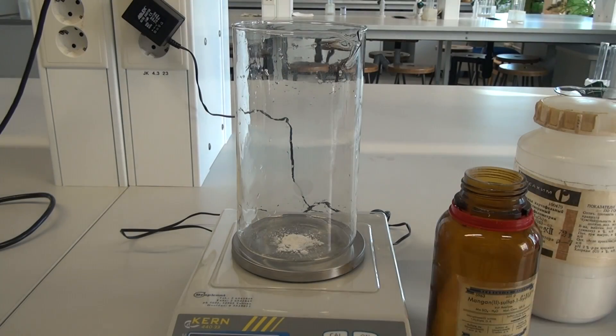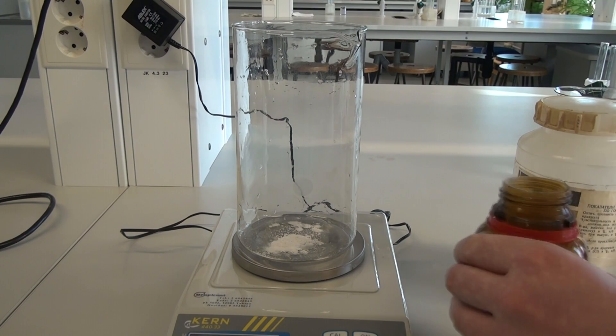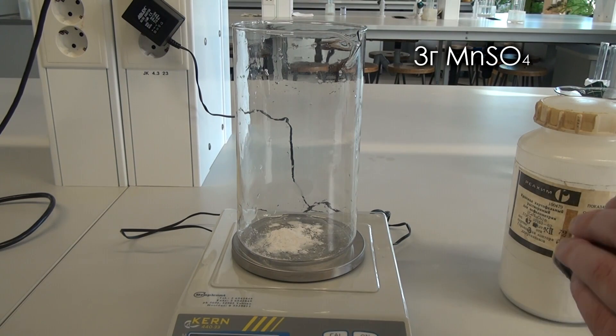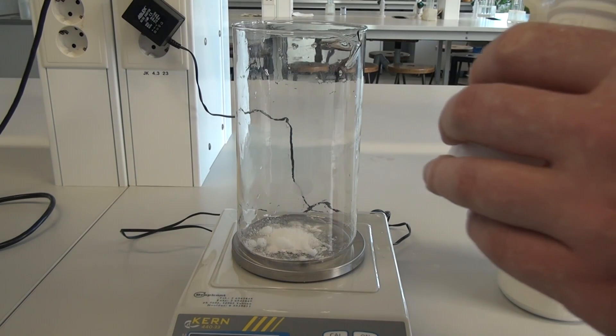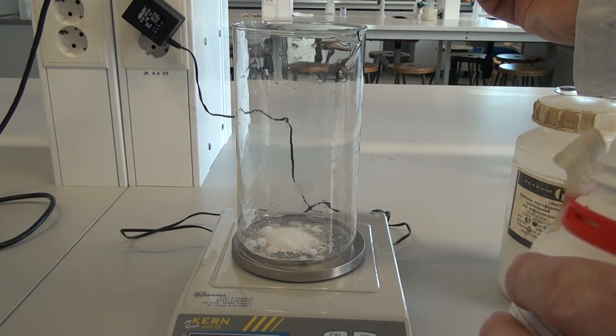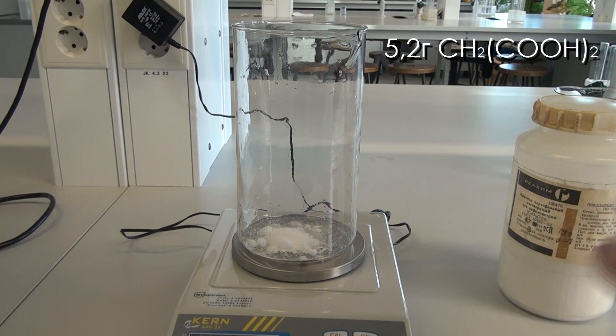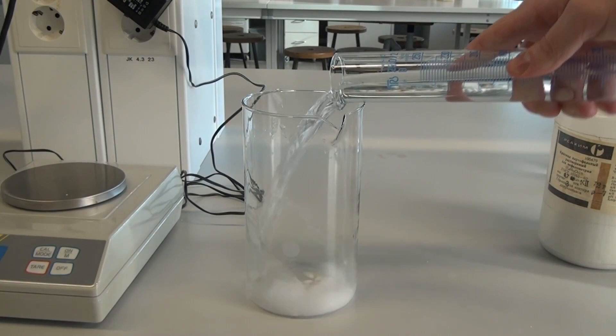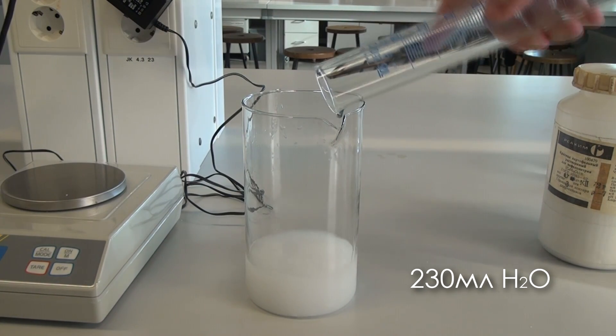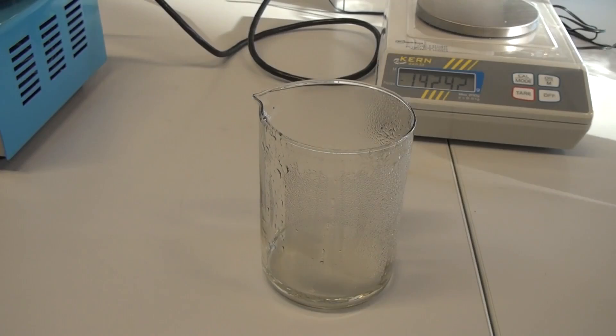Now let's prepare the third solution. Measure 3 grams of manganese sulfate and put it into a large glass. After that, add 5.2 grams of malonic acid, then add 230 milliliters of distilled water. However, the preparation of the third solution is not over yet.